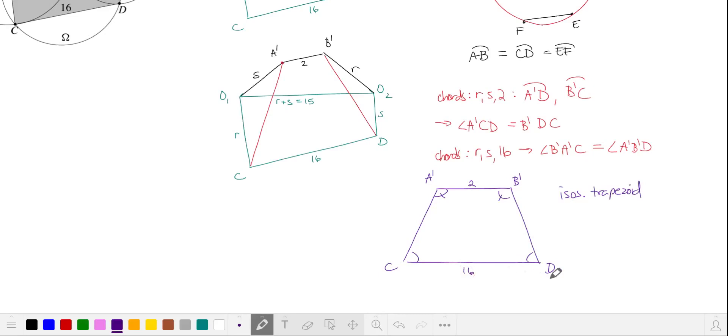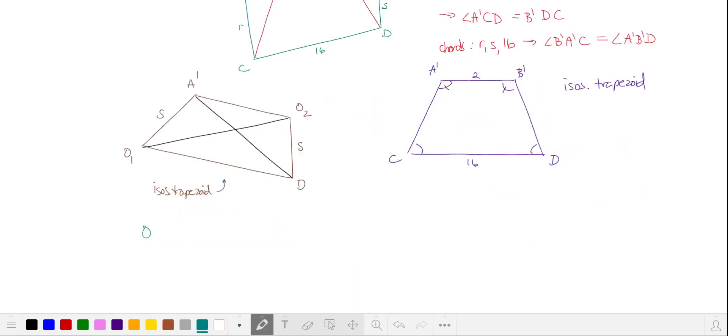Notice as well the cyclic quadrilateral with vertices A prime, O2, D and O1, because they have these opposite side lengths are both S, the radius of circle omega 2. This is also an isosceles trapezoid. Isosceles trapezoids have congruent diagonals. We know that the distance from O1 to O2 is 15. That's going to be the same as the distance from A prime to D. A prime D is also this diagonal of our other isosceles trapezoid. So 15 is the length of the other diagonal, B prime, C.